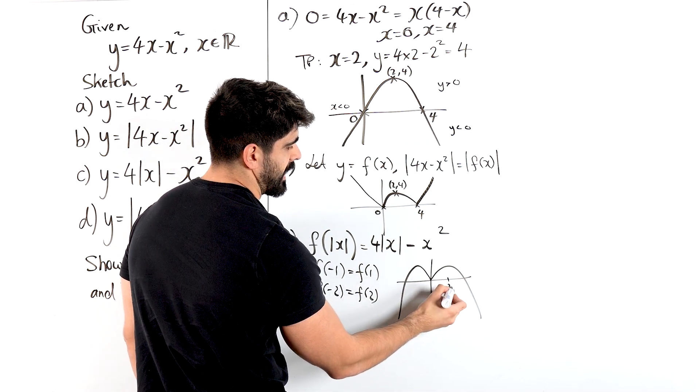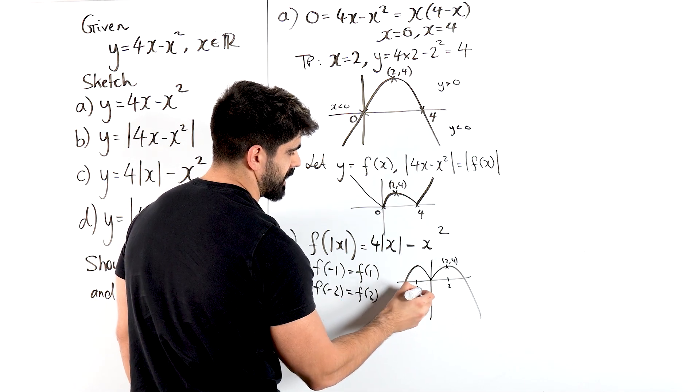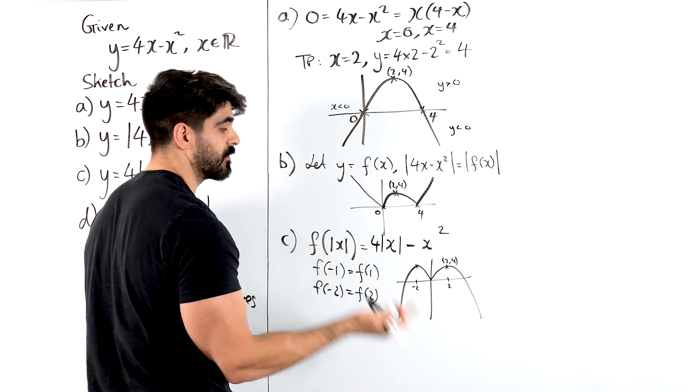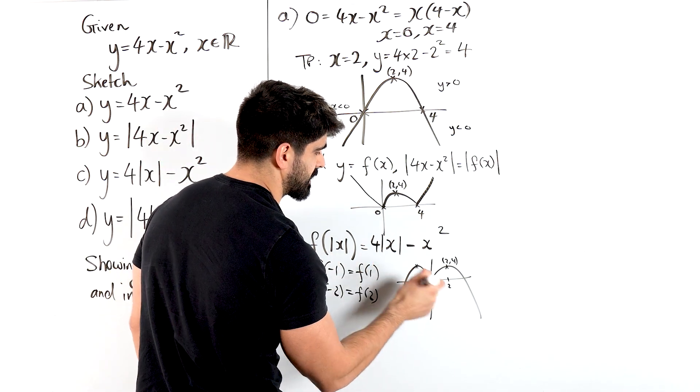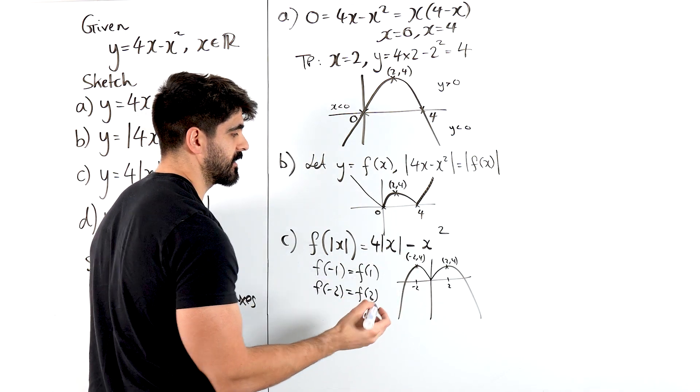So say you have 2, f of 2 is 4, right? 2, 4. And here where you have minus 2, when you sub in minus 2 into here, you get an f of 2 as well. So these two have the exact same value. So minus 2, 4. They asked you to indicate that.